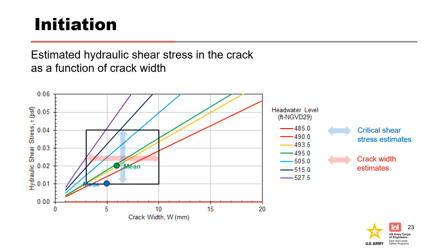The hydraulic shear stress at elevation 492 is about equal, and the hydraulic shear stress at elevation 490.5 does not exceed it. Therefore, based on mean values, initiation of erosion is not predicted at elevation 490.5, but it is for elevation 493.5. For the best estimate or mode parameters, shown by the blue dot, initiation of erosion is predicted for all reservoir levels above elevation 485, because the hydraulic shear stress in the crack exceeds the best estimate of the critical shear stress and crack width. This is consistent with the observed performance back in 1949.